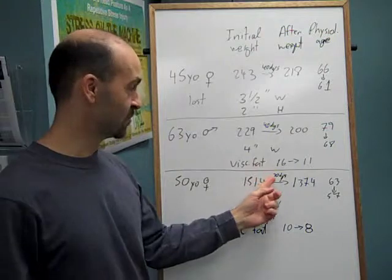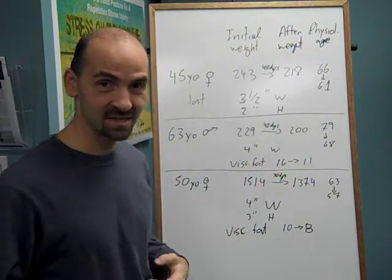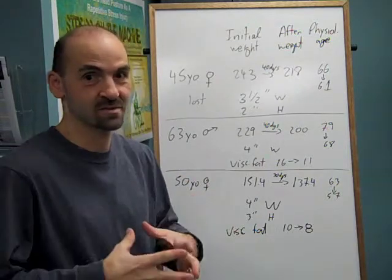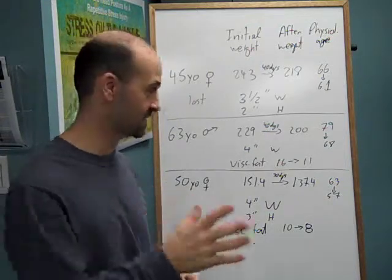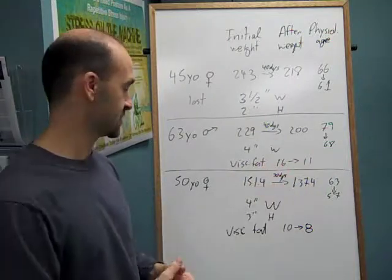His visceral fat, which is really important, went from 16 down to 11. That's the fat around the organs on the inside - it's really important for your cardiovascular health, blood pressure, cholesterol, and how long you're going to live. It's important that that would be less than nine, so we've still got to work through the program a little bit, but that's a really great, amazing change.